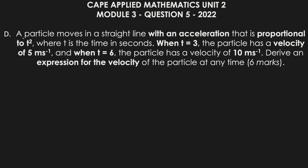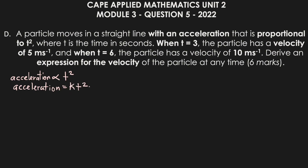Let's look at this line and try to break it down. We have a particle moving in a straight line with an acceleration proportional to t squared. They didn't tell us if it was directly or indirectly, but we will assume it's directly proportional to t squared. If it's proportional, we need a constant to measure it, so we can say acceleration is equal to a constant k multiplied by t squared — that is, acceleration equals k·t².